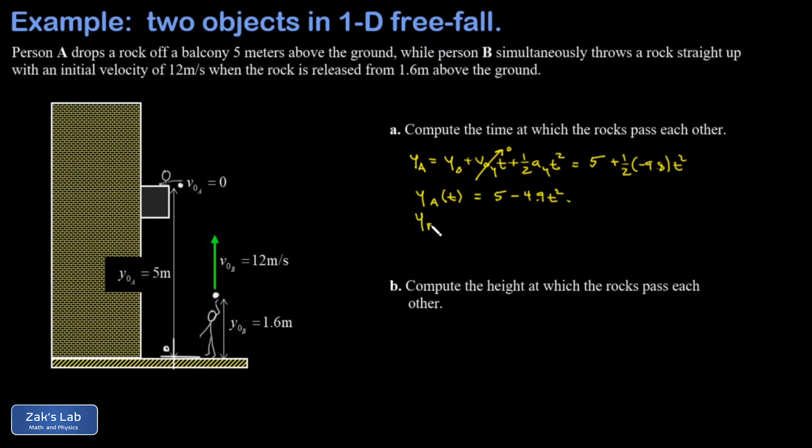We do the same thing now for rock B. Rock B is released from a height of 1.6 meters above the ground with an initial velocity of 12 meters per second, so there's a 12t term. The acceleration term looks the same—we plug in -9.8 because this is also in vertical free fall.